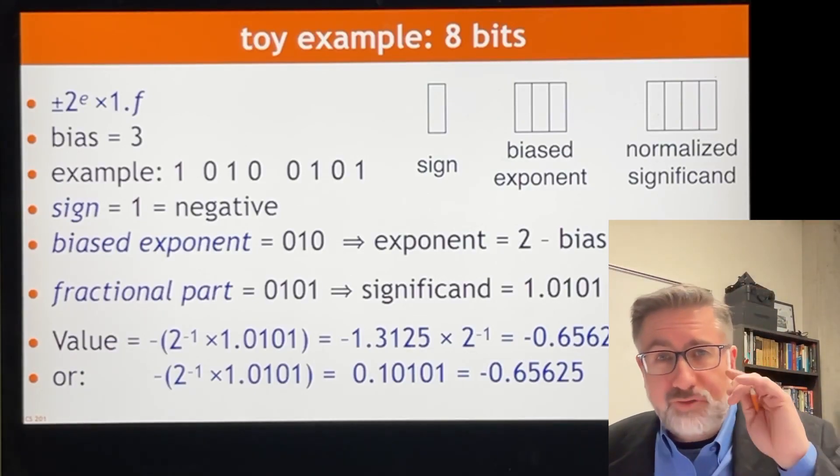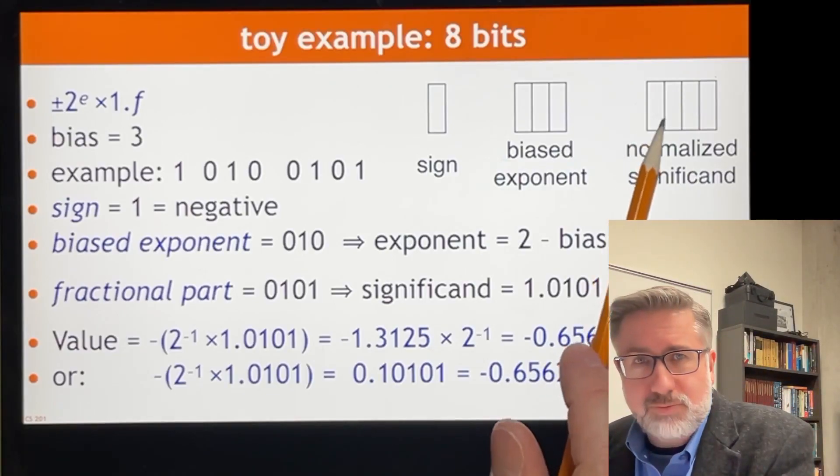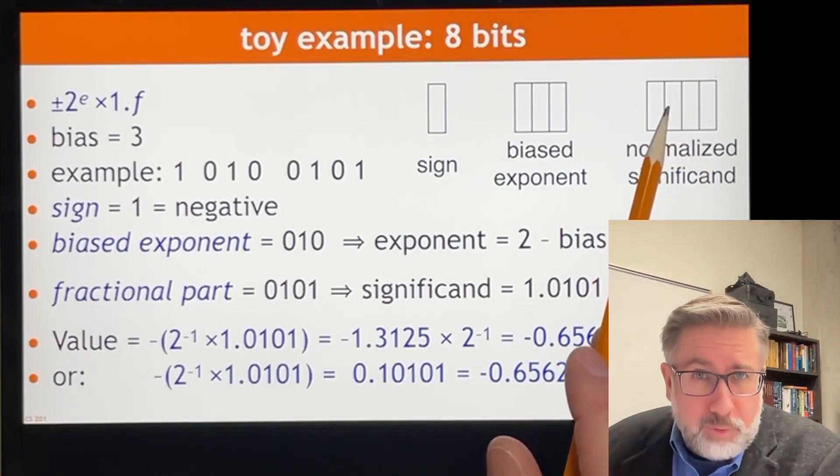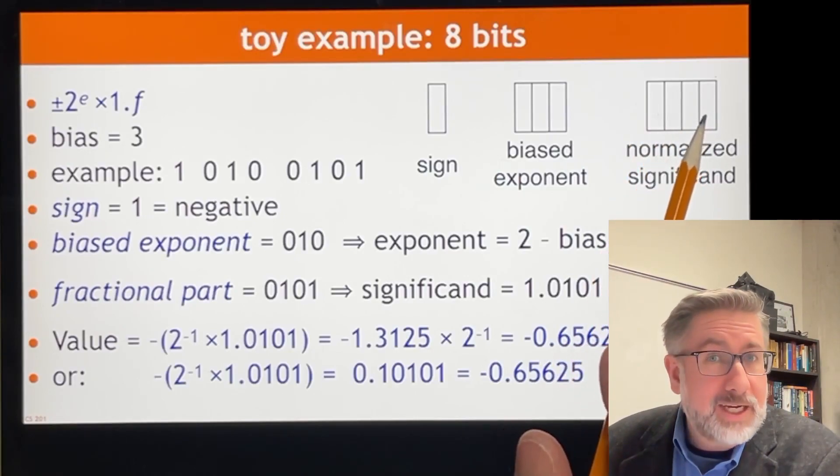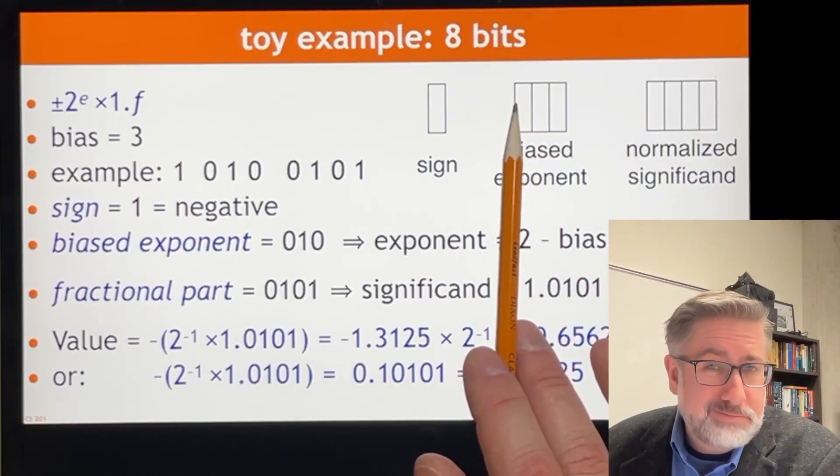And then the significand is normalized in the way that we said, which means those four digits that are in the significand, these ones right here, represent a number that is 1 point this, this, this, this, times 2 to the power of this, minus the bias.